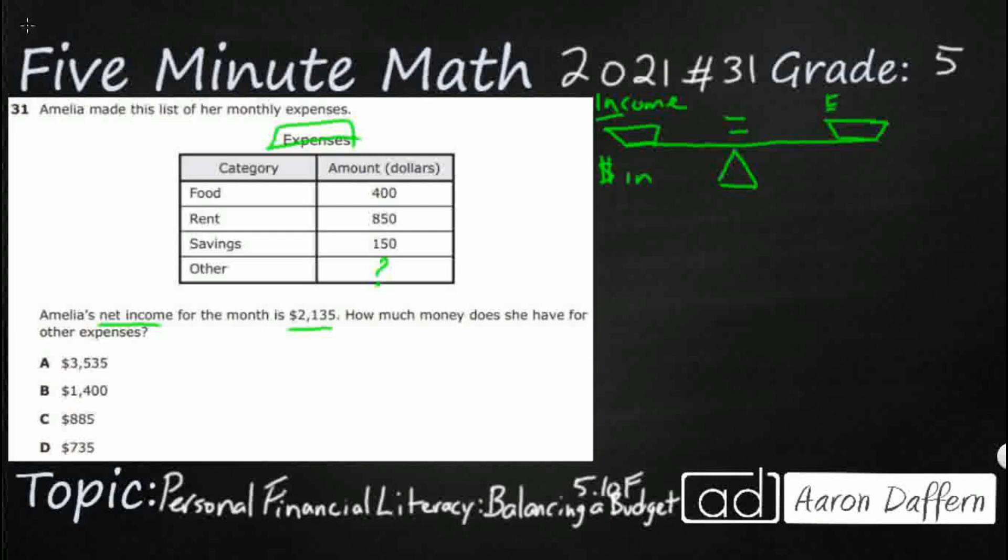And then we have our expenses. So this is what we're spending our money on. And we would like those to be even if possible. If they're going to be uneven, it's okay for your income to be greater than your expenses. What you just don't want is the opposite, where your income is less than your expenses, because now we're borrowing money or we're using credit cards to make all that happen.